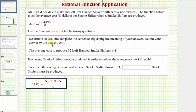We first want to determine A of 12 and complete the sentence explaining the meaning of this answer. We're asked to round to the nearest cent. So to evaluate A of 12, we substitute 12 for x.